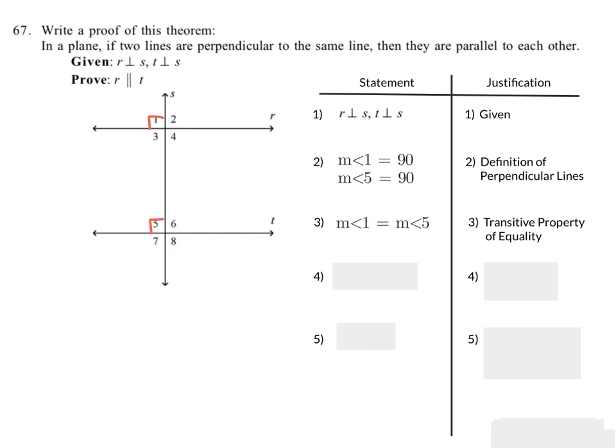Now, if two angles have the same measure, then those angles themselves are congruent. So angle 1 is congruent to angle 5. That is the definition of congruence.